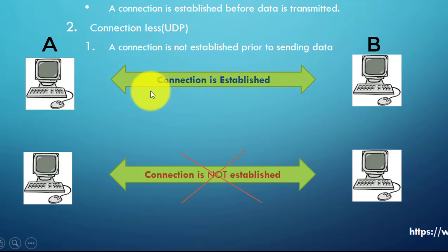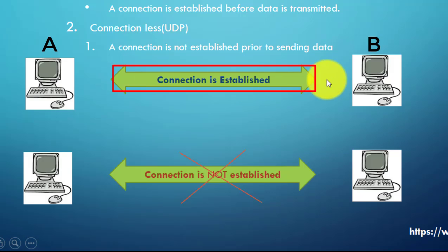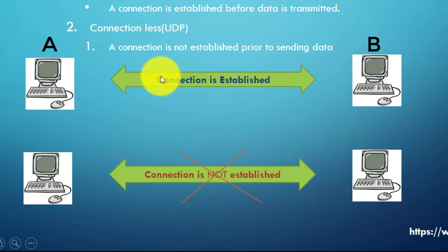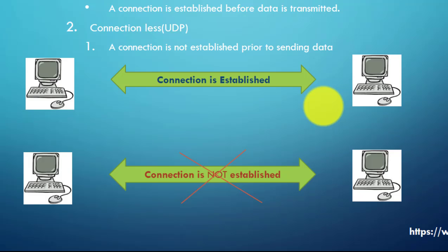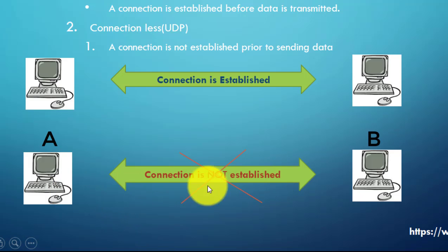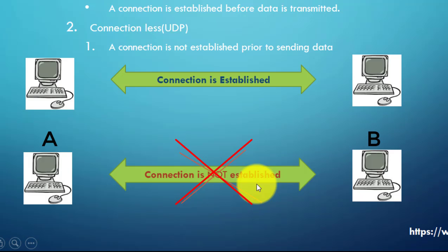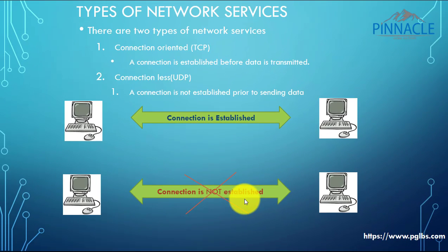To understand this better, have a look at these two pictures. There are two computers here, A and B. If A wants to communicate with B, a connection has to be established between A and B. This kind of service is called a connection-oriented service, achieved using a protocol called TCP. Protocols are nothing but rules and regulations to be followed. In connectionless service, if two systems have to communicate, a connection need not be established between the two systems.